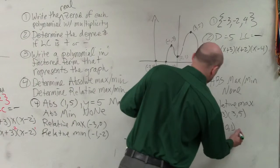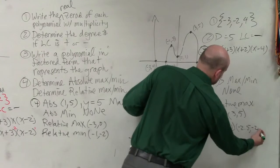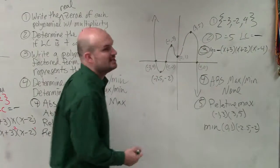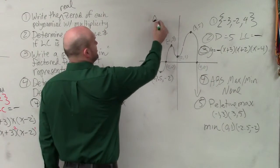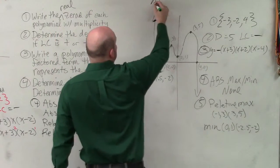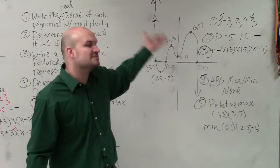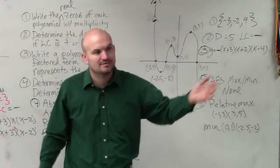Why wouldn't the absolute max be 3, 5? Well, because what about this point? Is this point higher than 3, 5? And then, is this point higher than that one? It's never ending, right? You're always going to have another point higher. So that's why we say there's no absolute max, okay?